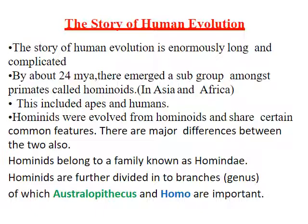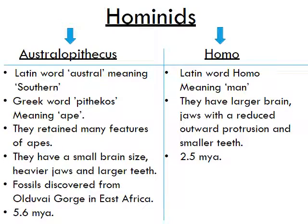Australopithecus is a Latin word: 'austral' means southern and 'pithecus' means ape, so Australopithecus means 'southern ape.' They retained many features of apes — small brain size, heavier jaws, and large teeth. Fossils discovered from Georgia in East Africa at 5.6 mya show Australopithecus.